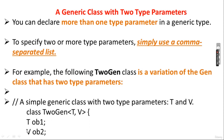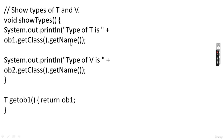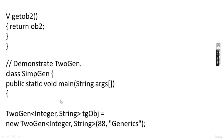T will be our first type parameter and V will be our second type parameter. The constructor takes T object1 and V object2. object1 is assigned o1 and object2 is assigned o2. The showType method displays the type of T as object1.getClass().getName() and type of V as object2.getClass().getName(), with getters returning object1 and object2 respectively.